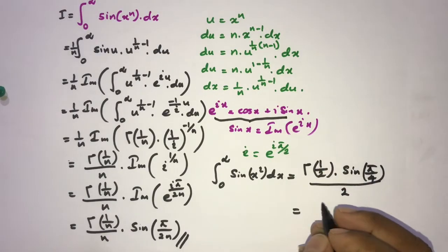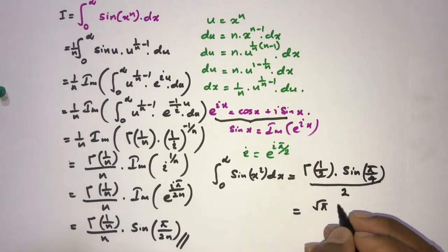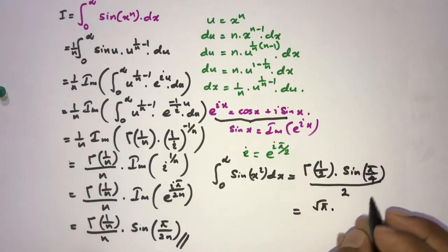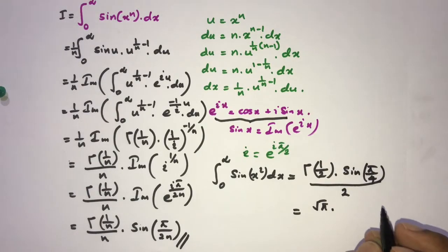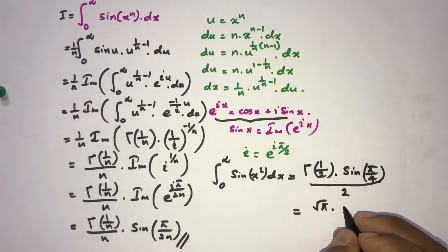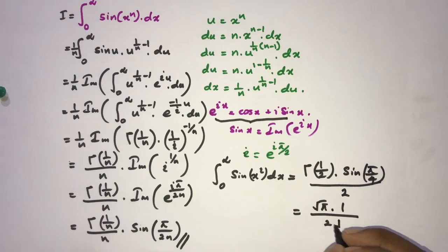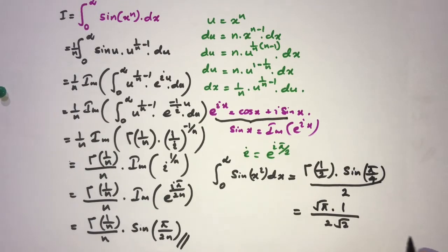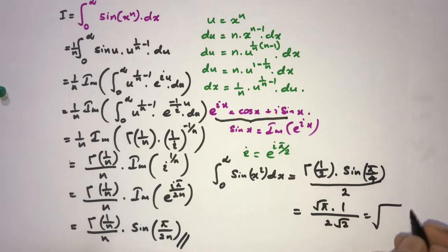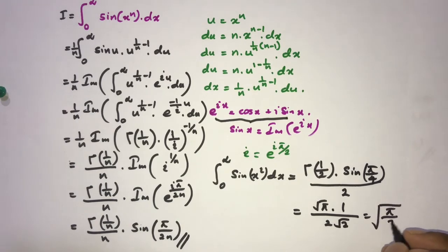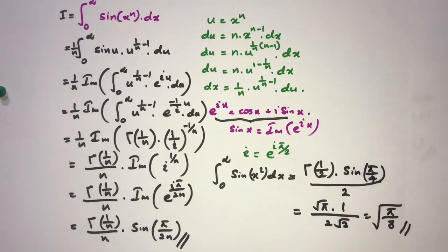We know Gamma(1 half) equals the square root of pi, and sine of pi over 4 equals 1 over square root of 2. So the result is square root of pi over 2 times 1 over square root of 2, which simplifies to the square root of pi over 8. Thank you for watching.